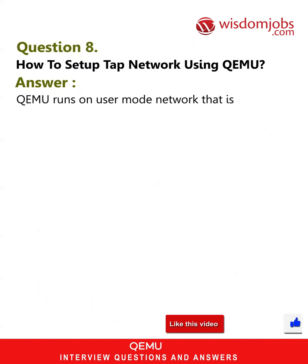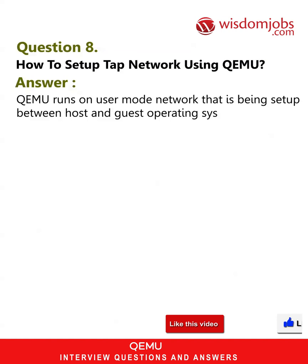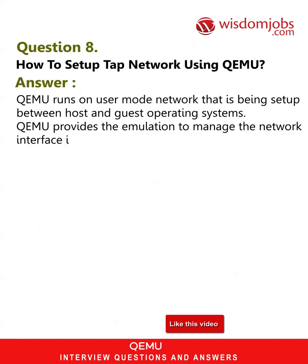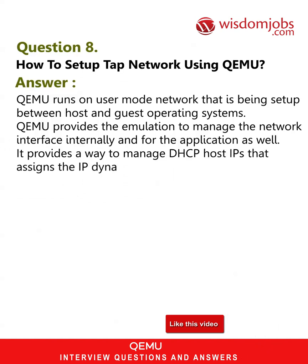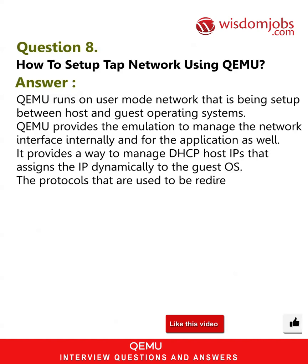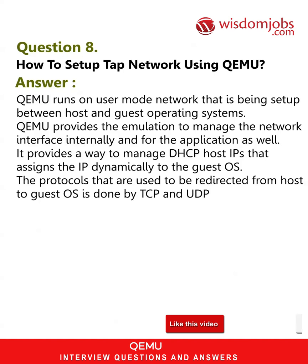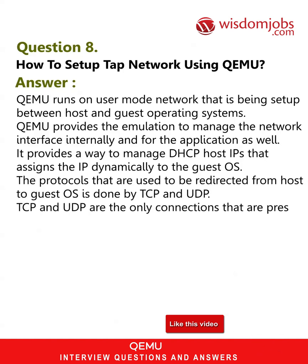Question 8: How to set up TAP network using QEMU? Answer: QEMU runs on user-mode networking that is set up between host and guest operating systems. QEMU provides the emulation to manage the network interface internally and for applications as well. It provides a way to manage DHCP host IPs that assign IPs dynamically to the guest OS. The protocols used to redirect traffic from host to guest OS are TCP and UDP, which are the only connections present by default.